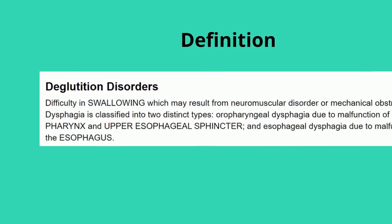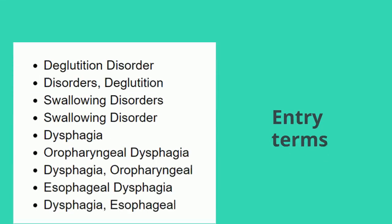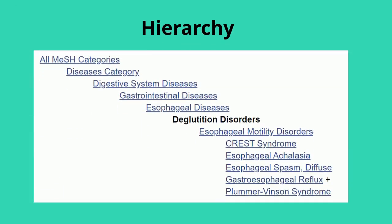This will give you a definition to make absolutely sure you've chosen the right thing, and further down there will be some other useful information. First, a list of entry terms, which are other words which currently are, or have been in the past, used for this concept. You might wish to incorporate some of these into your searches. And then a display showing the MeSH term in a hierarchy, so you can see which wider and narrower concepts it's connected to.